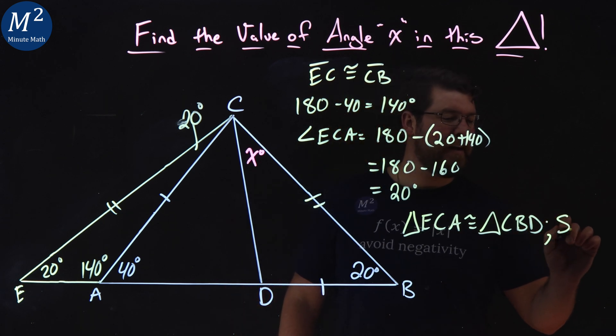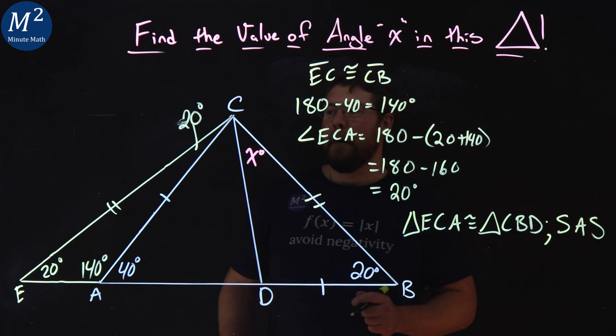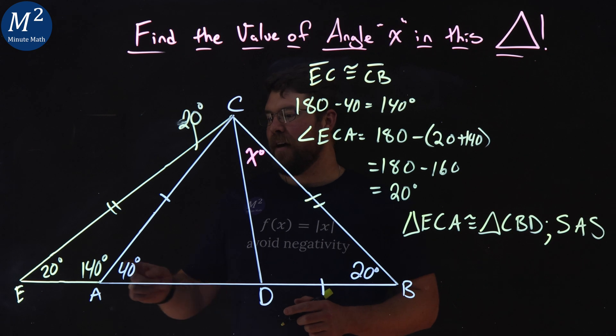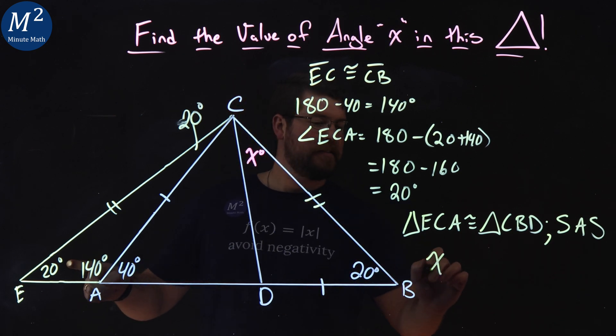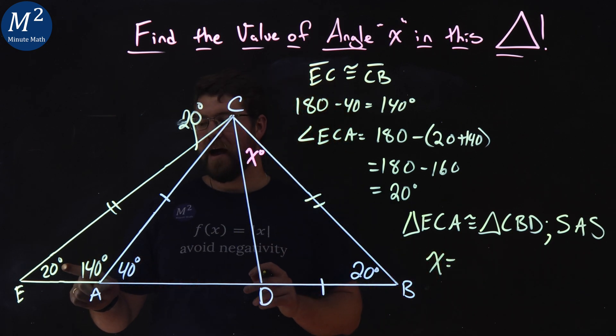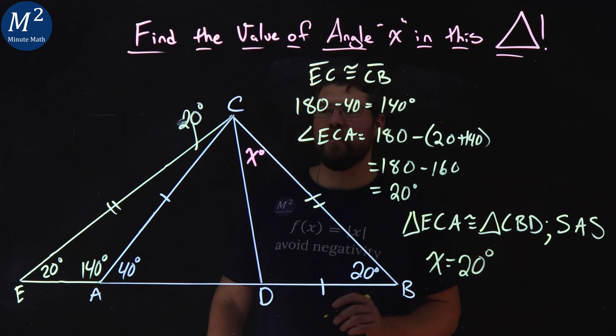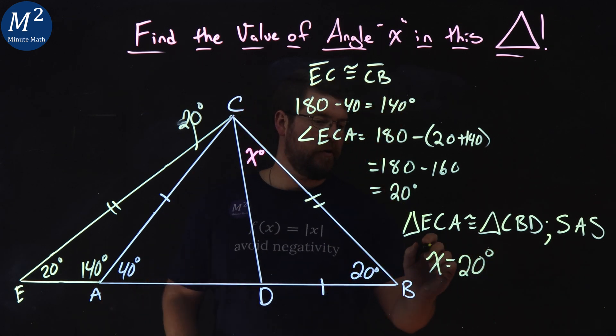This proves by side angle side. Meaning that first angle here, X, lines up with that one here, with E, so X has to be 20 degrees because the two triangles are congruent. And there we have it.